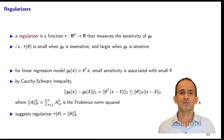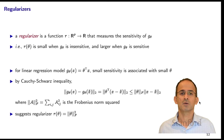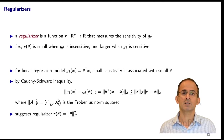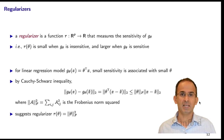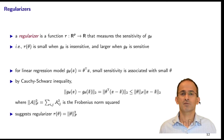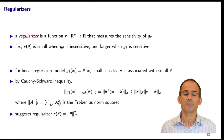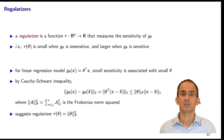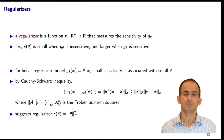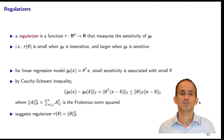A regularizer is a function of theta that measures how sensitive the predictor g_theta is. It's a function r that takes theta as input and returns a real number. r(theta) is chosen to be small when g_theta is insensitive, and large when g_theta is sensitive.